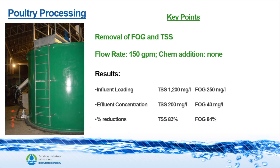In this example, we have a poultry processing plant trying to remove FOG and TSS. The flow rate was 150 gallons per minute and they were adding no chemicals. The influent loading was 1,200 mg/L of TSS and 250 mg/L of FOG. The effluent concentrations leaving the unit were 200 mg/L of TSS and 40 mg/L of FOG, yielding a reduction of 83% in TSS and 84% in FOG.